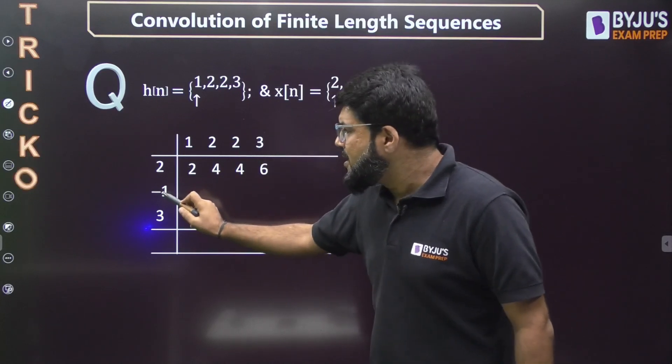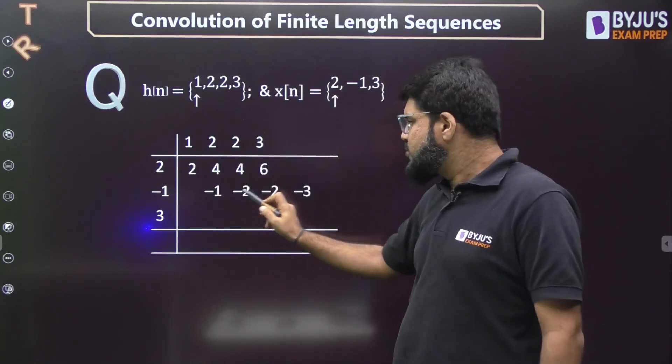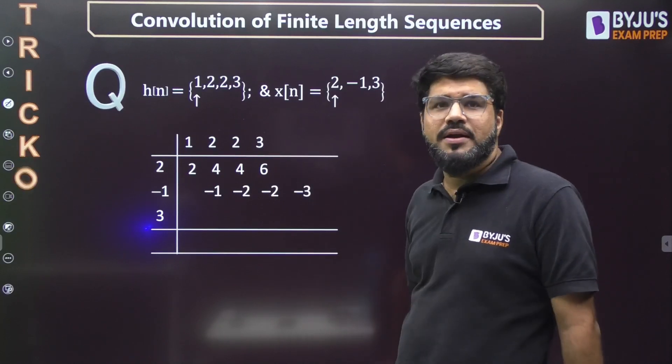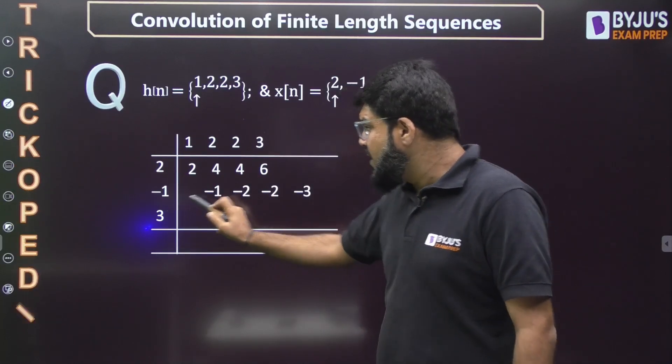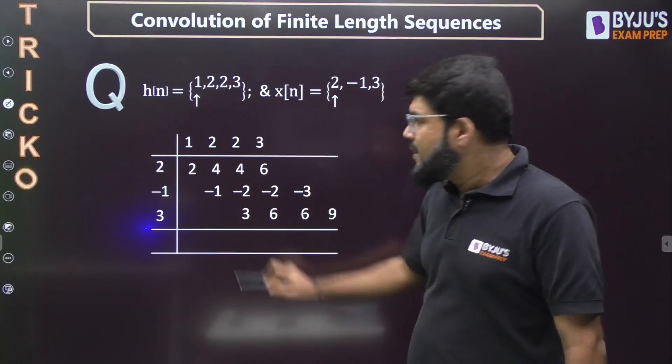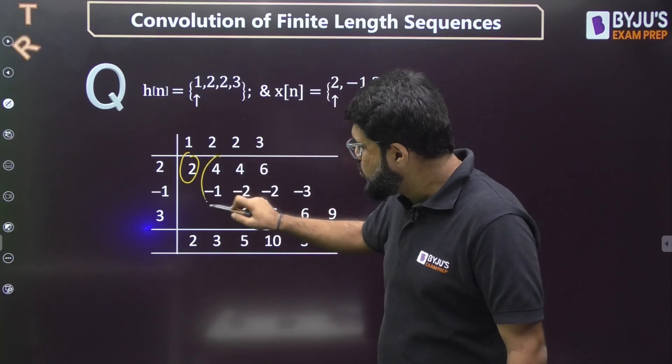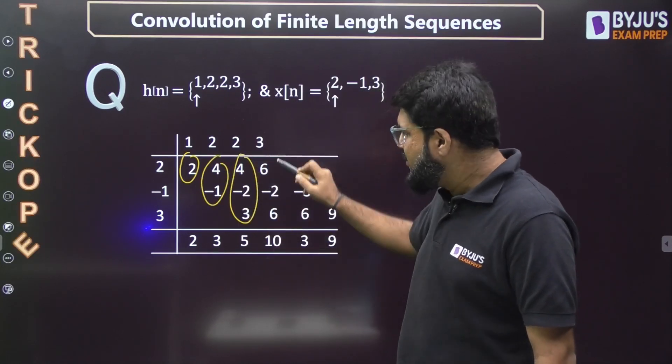Multiply this 2 by all the numbers on the top, so this becomes 2, 4, 4, 6. Similarly multiply all the numbers by -1 and write down the result one unit right: -1, -2, -2, -3. Multiply by 3, write down the result one more right shifted: 3, 6, 6, 9. Then do the sum by column.